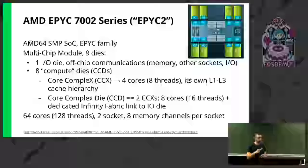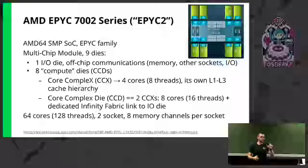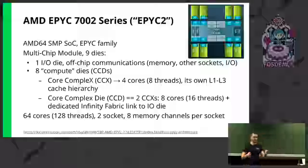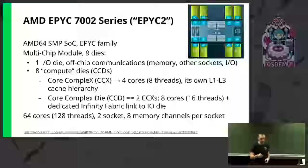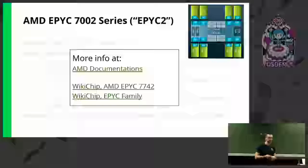Let's also introduce the concept of core complex die, or CCD, which is basically two CCXs — so eight cores, 16 threads. The important thing about CCDs is that each CCD has a dedicated Infinity Fabric link to the I/O die. These processors can have up to 64 cores, which means 128 threads, and you can have them in a two-socket arrangement. Each socket has eight memory channels.